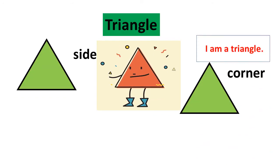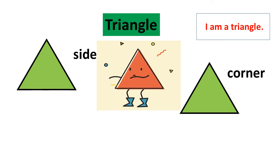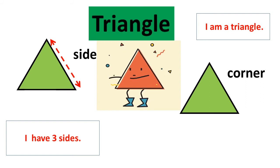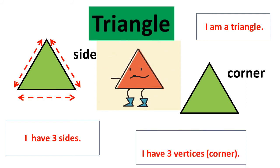This is a triangle. I am a triangle. I have three sides. How many sides do I have? Yes, a triangle has three sides and three vertices or corners.